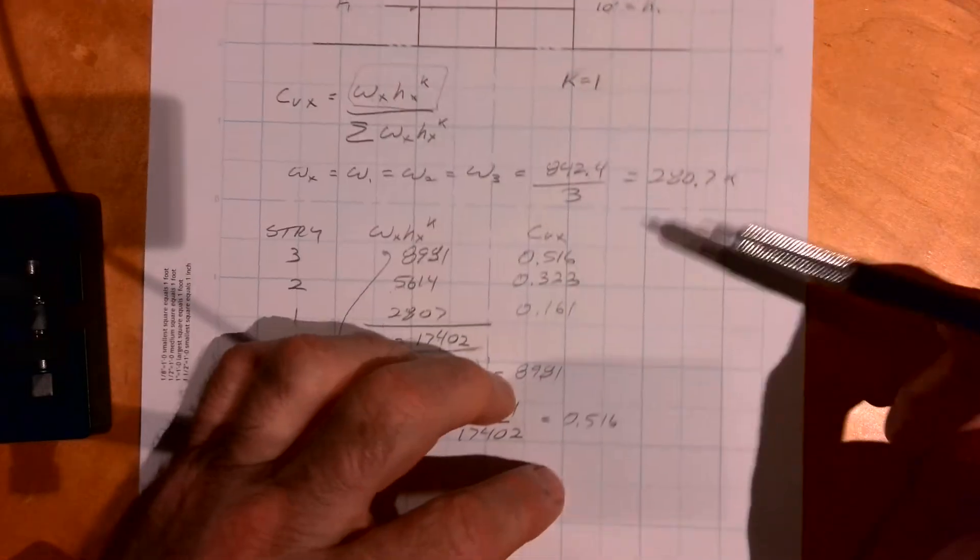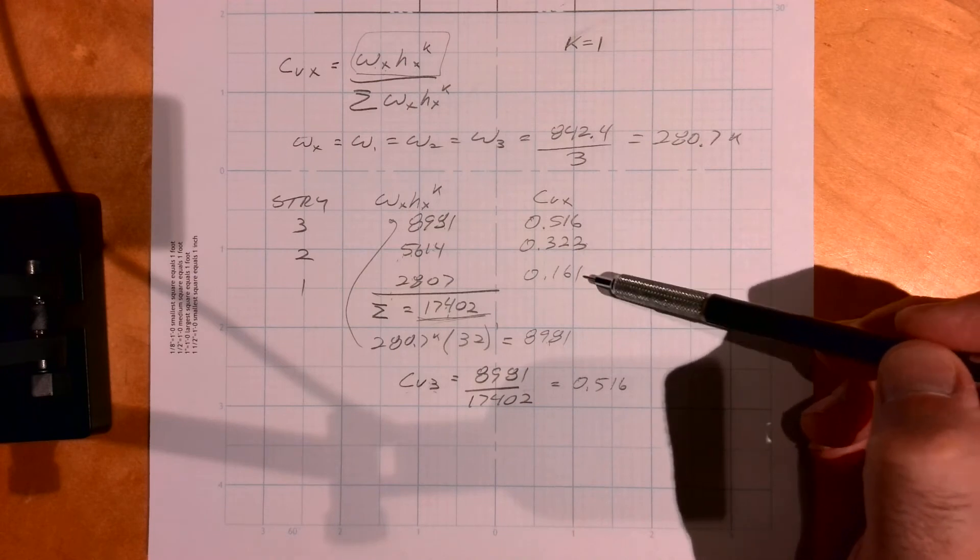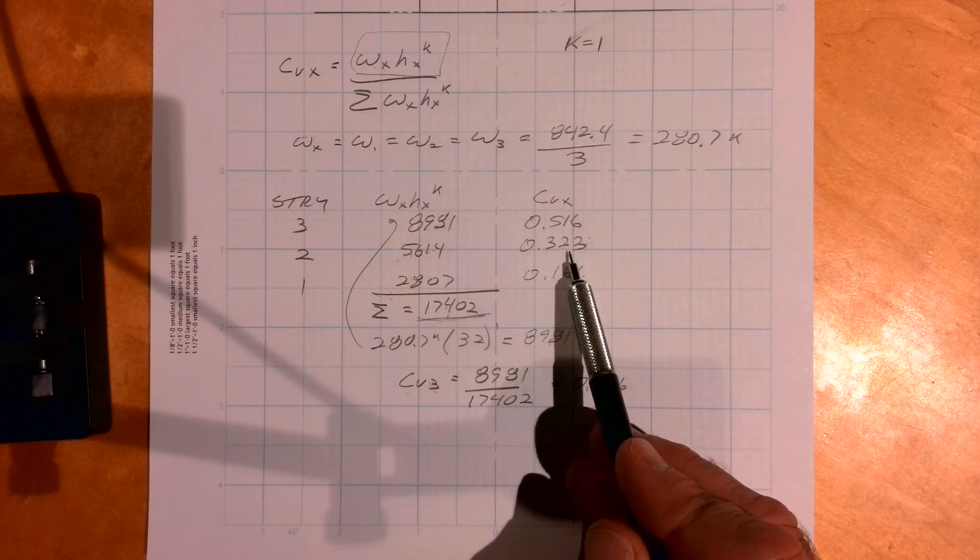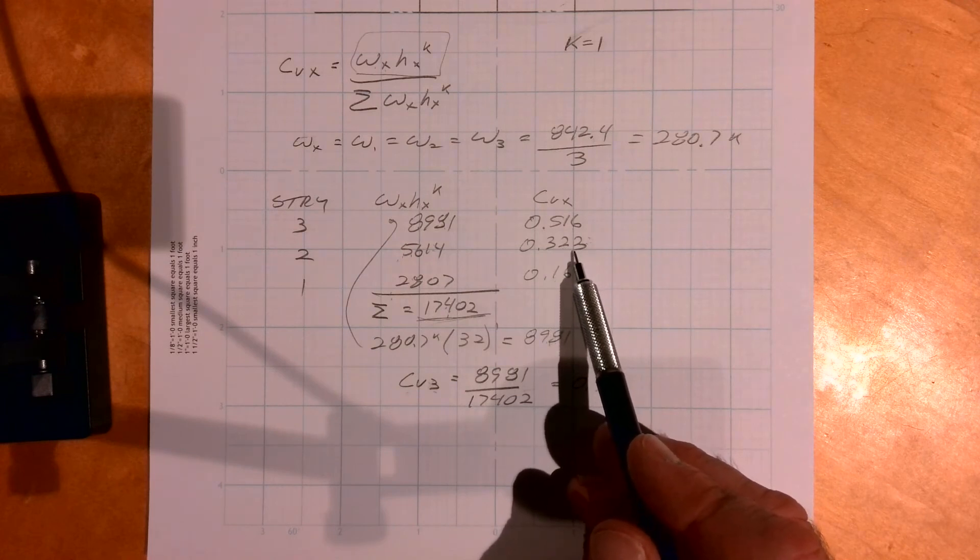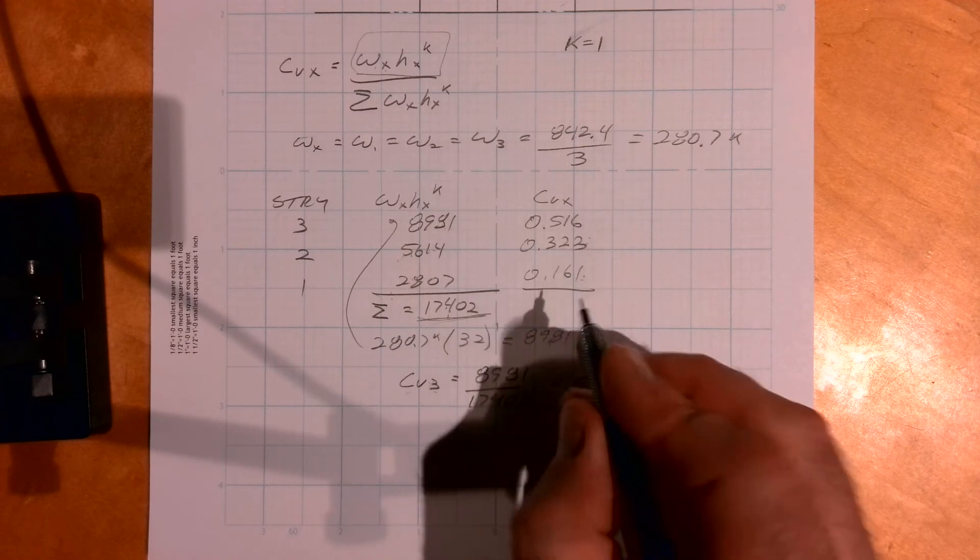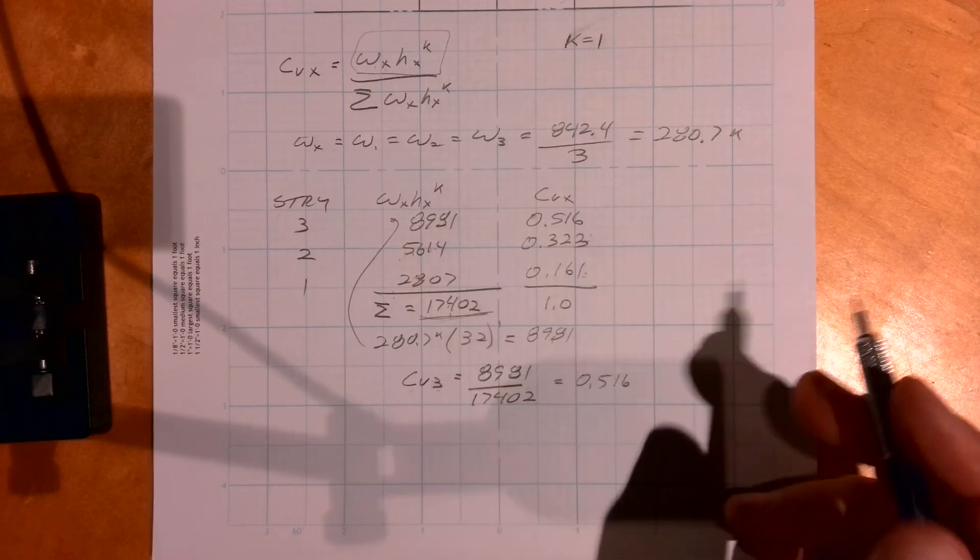Okay, so calculating the other two levels we get those numbers. So 32 and change percent to the middle level, and then if I add these up they should equal 1.0. If they don't, I did something wrong.